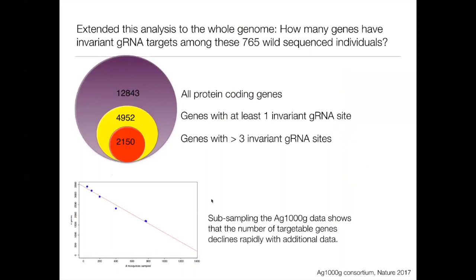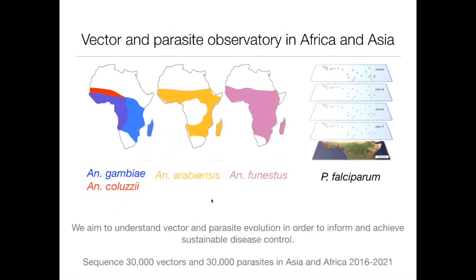We extended this analysis to the full genome, looking across the 13,000 or so annotated genes to ask how many have invariant guide RNA targets. Actually, less than half the genes even have a single invariant guide RNA target. When we tried multiplexing — since any realistic gene drive is going to target multiple sites — about 2,000 genes remained in the running for having more than three invariant guide RNA sites. There's a lot of variation out there in these mosquitoes, and having genomic data to understand where there's less variation is useful for gene drive vector control.